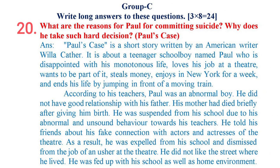Question 20: What are the reasons for Paul committing suicide? Why does he take such a hard decision? (Paul's Case) Answer: Paul's Case is a short story written by American writer Willa Cather. It is about a teenage schoolboy named Paul who is disappointed with his monotonous life. He loves his job at a theater, wants to be part of it, steals money, enjoys New York for a week, and ends his life by jumping in front of a moving train.